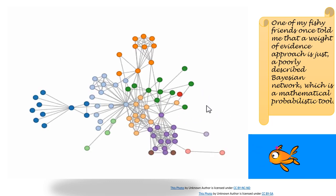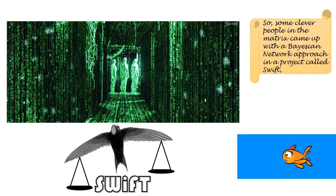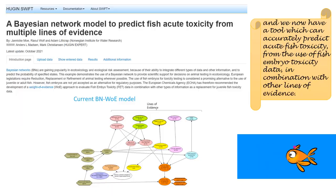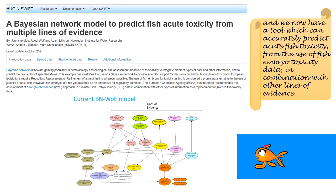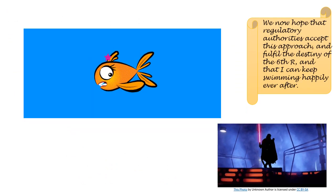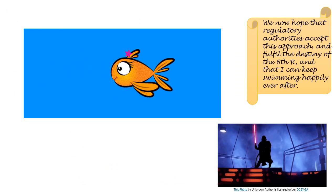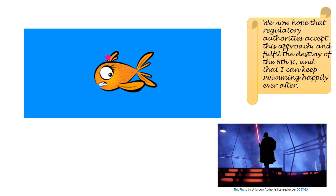One of my fishy friends once told me that a weight of evidence approach is just a poorly described Bayesian network — a mathematical probabilistic tool. So some clever people came up with a Bayesian network approach in a project called SWIFT, and we now have a tool which can accurately predict acute fish toxicity from fish embryo toxicity data in combination with other lines of evidence. We now hope that regulatory authorities accept this approach and fulfill the destiny of the sixth R, so that I can keep swimming happily ever after.